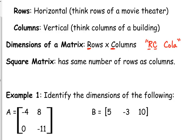Matrix A has one, two rows, and it has one, two columns. So this is a two by two, which means matrix A is also a square matrix because it has the same number of rows as it does columns.